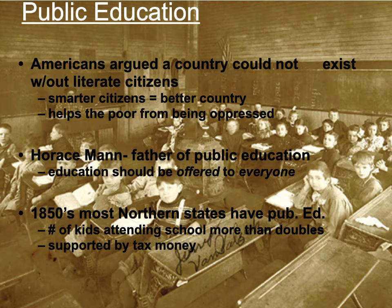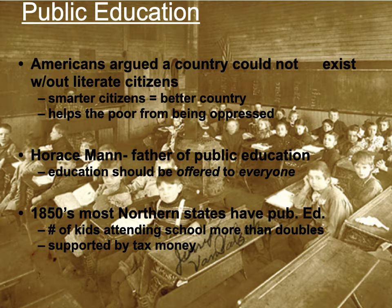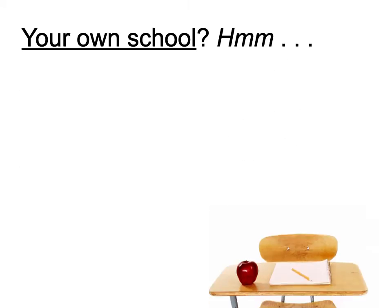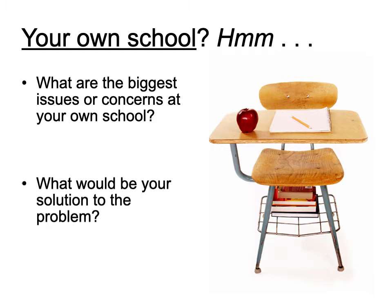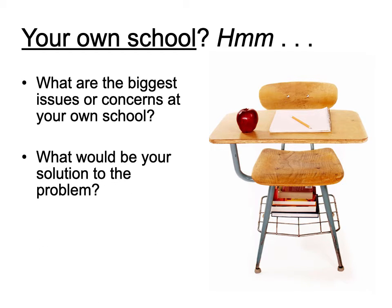By the 1850s most northern states had public education, and the number of students attending schools more than doubled. This was all supported by tax money. Think about our school — what are some of the issues or concerns at your own school? Think back to before and what were some of the issues that we had at our school? And what would your solution to the problem be?